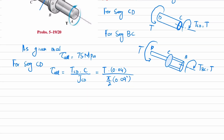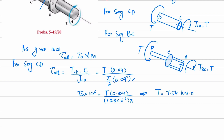The allowable shearing stress is 75 times 10 to the power 6, equal to T times 0.04, divided by 1.28 times 10 to the power negative 6 multiplied by pi. Solving this gives a torque of 7.54 kilonewton meters. This is the torque that can be applied on segment CD.